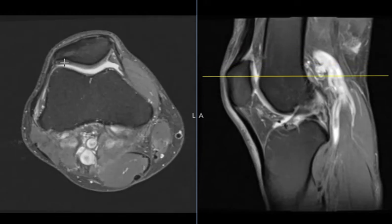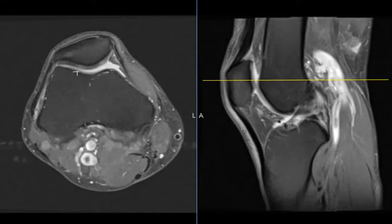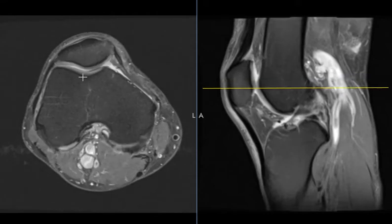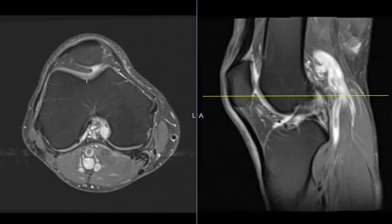normal kneecap in the front. We see the cartilage along the back surface and over the gray cartilage we see this bright area. This is fluid in the knee joint, and this is the femur.